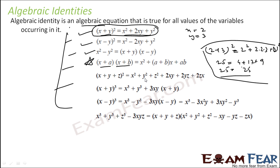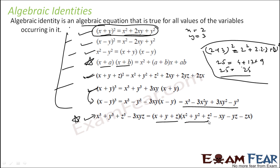(x+y+z)² = x² + y² + z² + 2xy + 2yz + 2zx — very important. (x+y)³ = x³ + y³ + 3xy(x+y) — very important. Replace y with −y for the next identity. Also very important: x³ + y³ + z³ − 3xyz = (x+y+z)(x² + y² + z² − xy − yz − zx). We'll prove some of these; please remember all of them by heart.